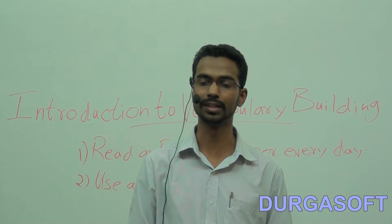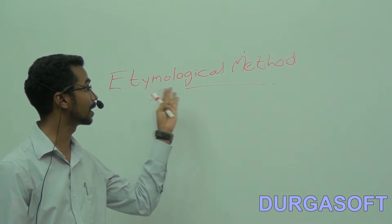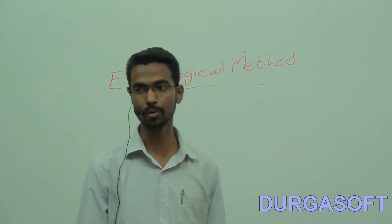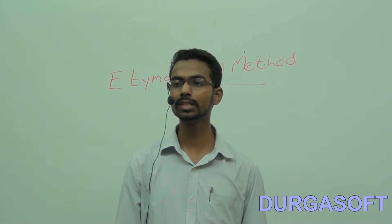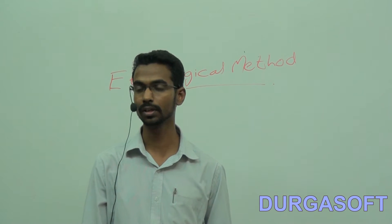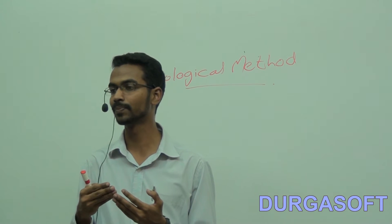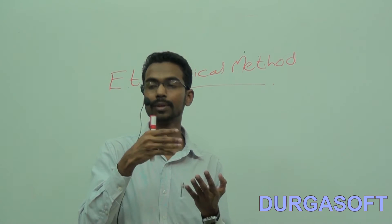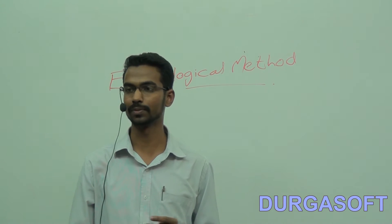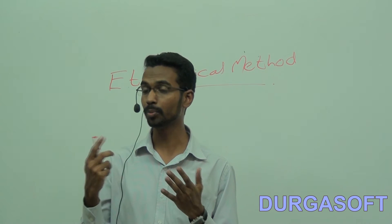The first method is what I would like to call the etymological method. Have you heard of the word etymology? Etymology is the study of the evolution of words — how words originated and gradually changed their meanings to come to their present meaning. That study is what you call etymology.